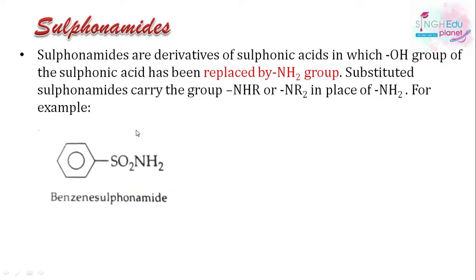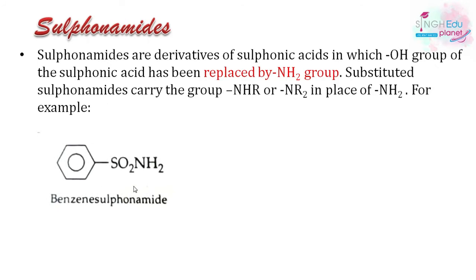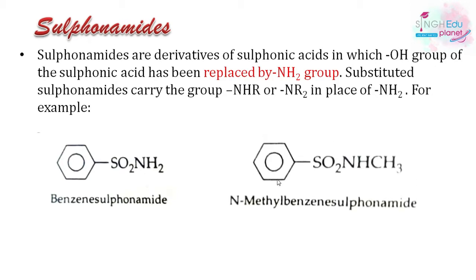For example, benzene sulfonamide: in benzene sulfonic acid we replace the OH with an NH2 group to get benzene sulfonamide. N-methyl benzene sulfonamide can also be formed, in which the R group is a methyl group attached to nitrogen. This is a sulfonamide. Now, how do we prepare them?